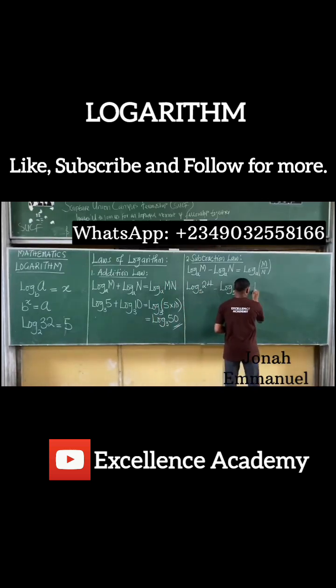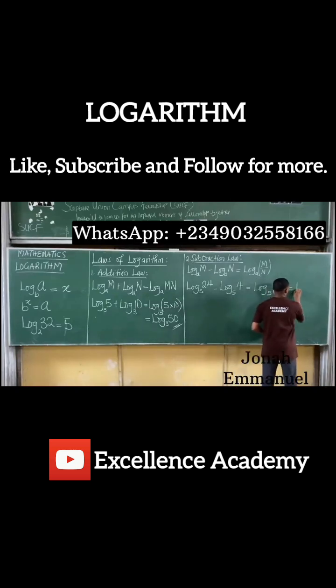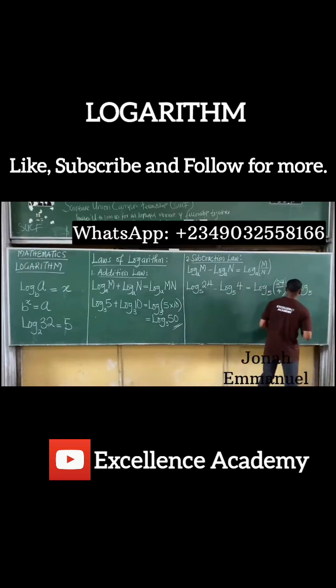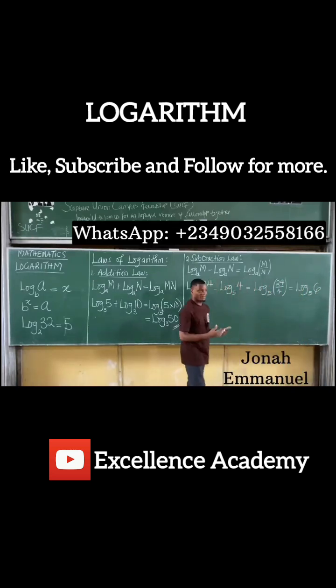This will be equal to log, since they are both base 5, I'll have base 5 into this divided by this. So it becomes 24 all over 4, and this is equal to log base 5 into 24 divided by 4 is equal to 6. So I'm having this. So it becomes log 6 base 5.